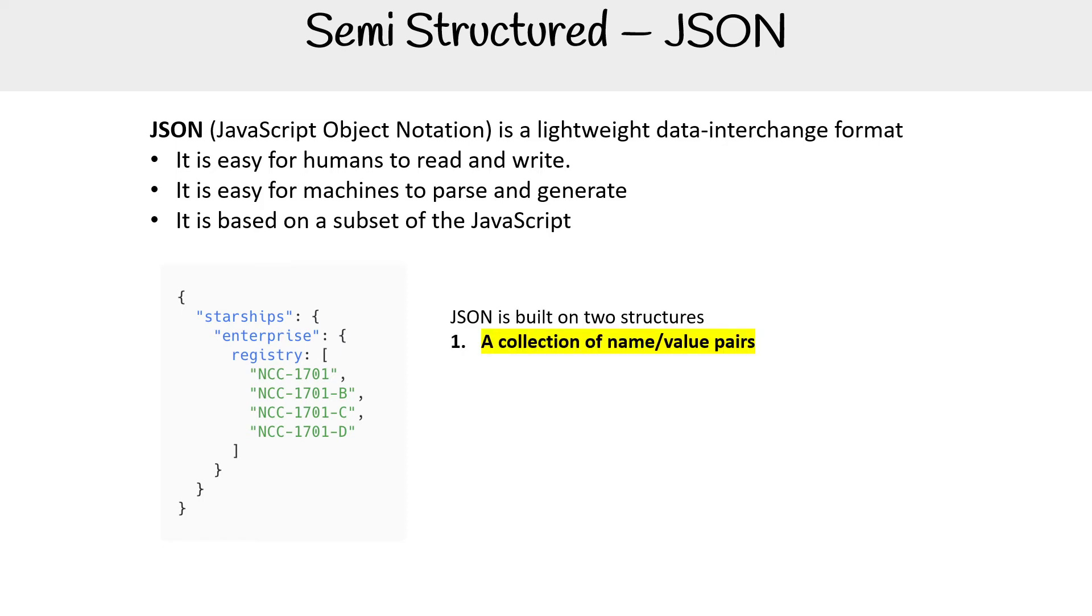The first is a collection of name value pairs. In other languages, this is realized as an object, a record, a struct, a dictionary, a hash table, keyed list, or associative array.